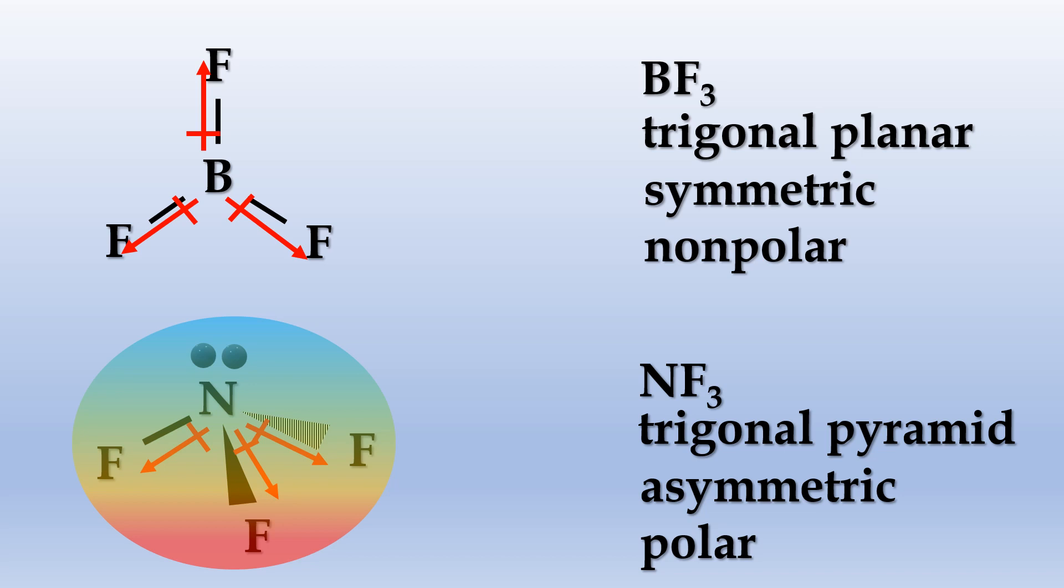This can also be represented by an electrostatic potential map. The red area indicates high electron density, and the blue area low electron density.